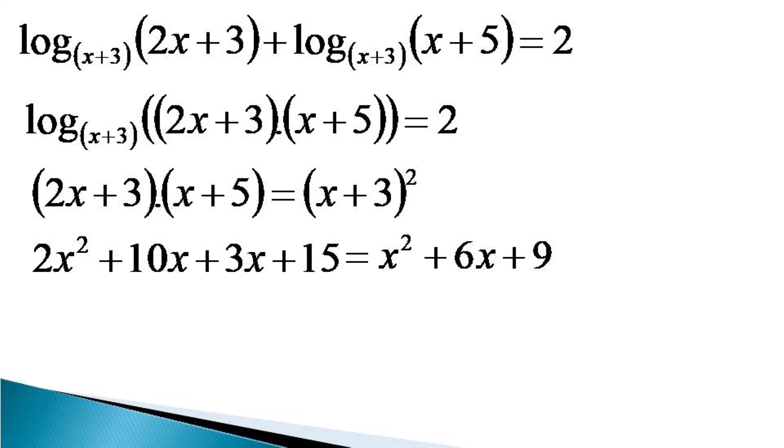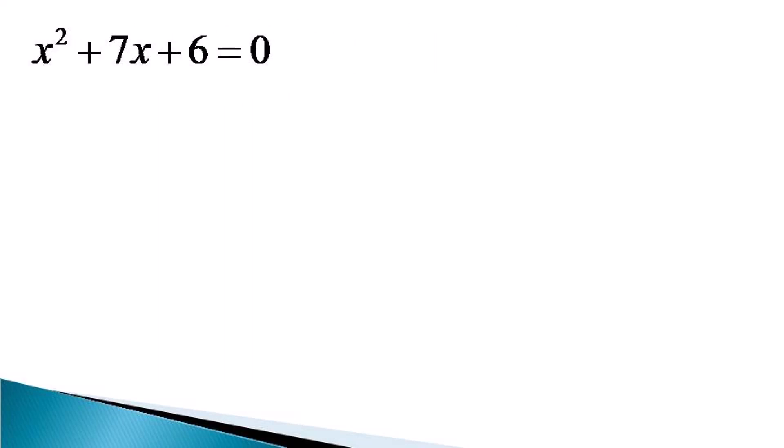Now we take all the terms on the left hand side and simplify the equation to get x square plus 7x plus 6 is equal to 0. This is a quadratic equation and must be having two solutions.